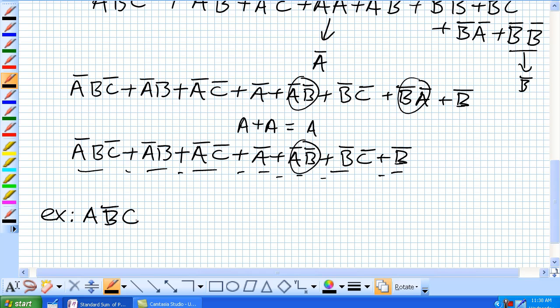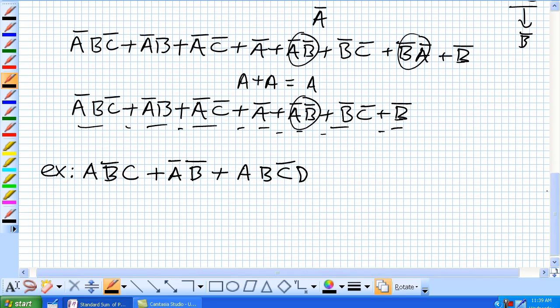Because now check this one out here. A, not B, C. Or, not A, not B. Or, A, B, C, D. Let's make that a not C. Okay. So what's the domain? It's A, B, C, D. Notice the first term is missing the D. Notice the second term is missing the C and D. So we have to fix this.